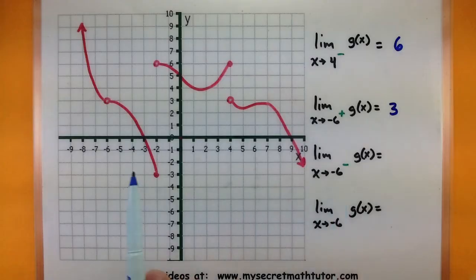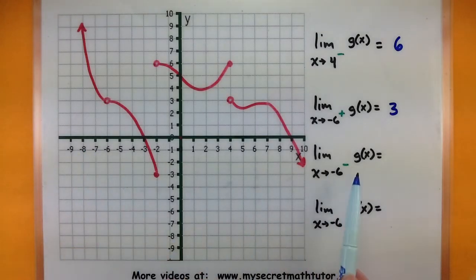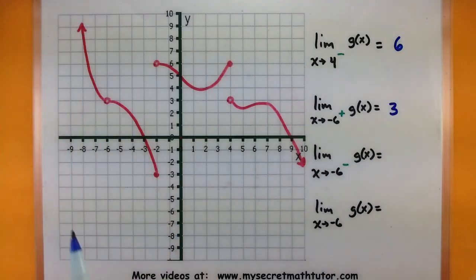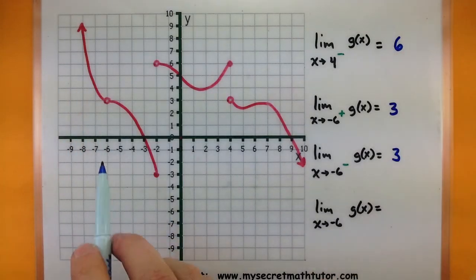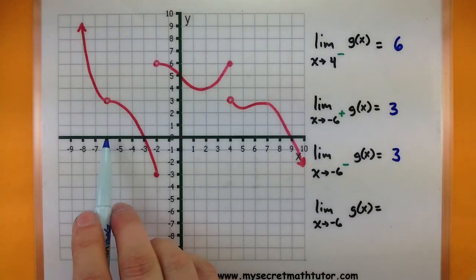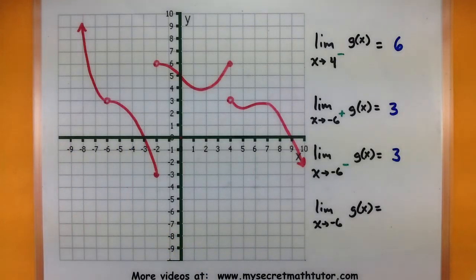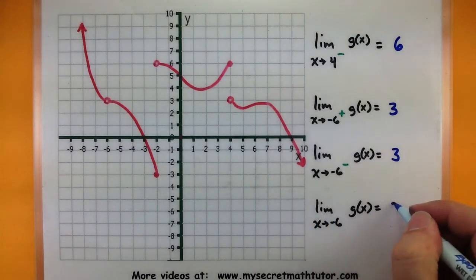What is the value as x approaches negative 6 from the left side now? That's what the little negative sign is telling me. It looks like we are approaching 3 as well. Notice how on this one, if I approach from the right side and the left side they both equal 3, which means if I'm looking at just a regular everyday limit, this will also equal 3.